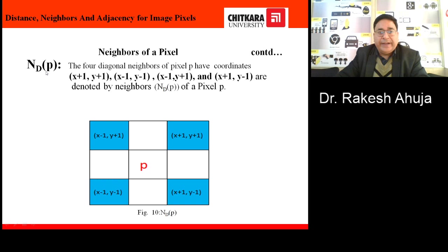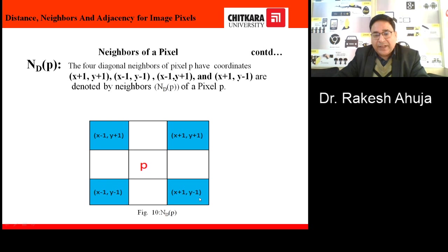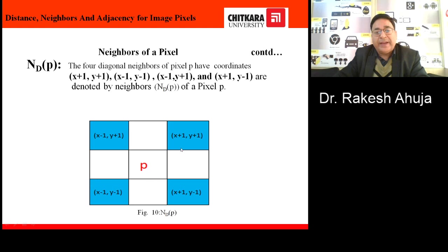Now we will discuss ND(p), which refers to the diagonal pixels of pixel p. The four diagonal pixels of pixel p are (x+1, y+1), (x-1, y-1), which lie at a +45 degree angle, and two more pixels that lie on the other diagonal: (x-1, y+1) and (x+1, y-1). These four pixels lie on the diagonals of this matrix and are considered the four diagonal neighbors of pixel p, denoted by ND(p).